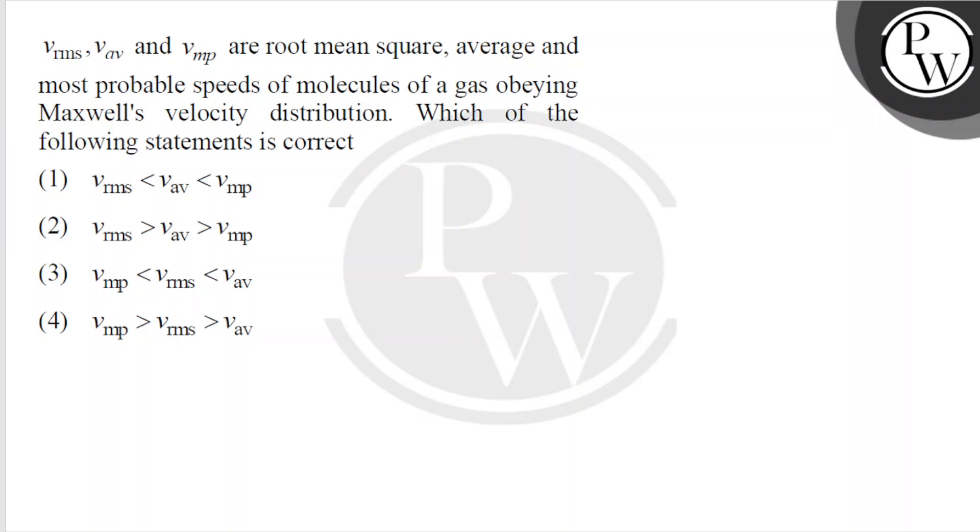Hello, let us read this question. The question says vrms, vav, and vmp are the root mean square, average, and most probable speeds of molecules of a gas obeying Maxwell's velocity distribution. Which of the following statement is correct?